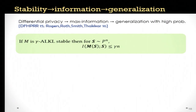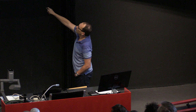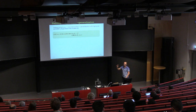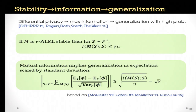From the bound on mutual information they derive generalization guarantees. Their approach is based on a known connection first discovered by Catoni and McAllister in PAC-Bayes analysis, and more recently by Russo and Zou in adaptive data analysis. They give a somewhat stronger variation showing that the expected generalization error — the difference between empirical and true mean — is upper bounded by the mutual information, and they scale it by the variance of the query, making it stronger than some previous bounds.